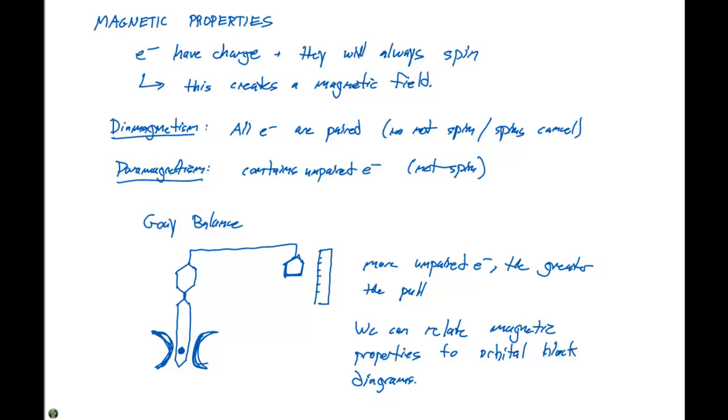And again, we'll come back to this concept in chapter nine when we look at molecular orbital diagrams. So these are the things that you need to think about when we're discussing magnetic properties.